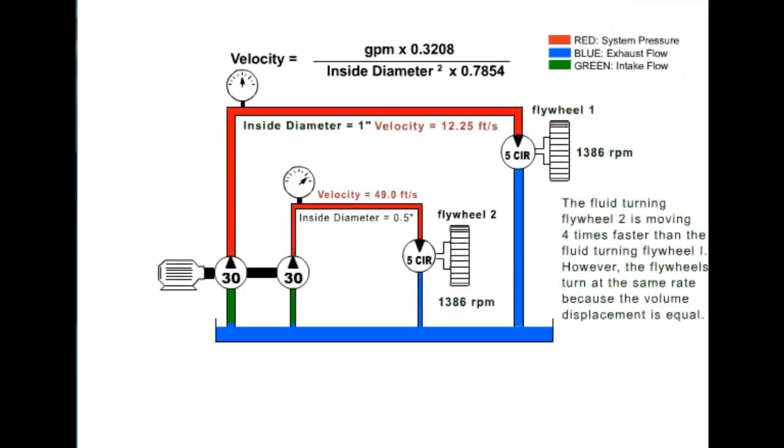To better illustrate this principle, we have two simple systems in which two pumps of equal displacement of 30 gallons per minute move fluid through conductors of different sizes. The displacement remains equal, while the velocity of the fluid varies with the size of the conductor. The fluid turning flywheel 2 is moving four times faster than the fluid turning flywheel 1, because the inside diameter of the pipe for flywheel 1 is twice the size of the inside diameter of flywheel 2. However, the flywheels turn at the same rate, because the volume displacement is equal in both systems.